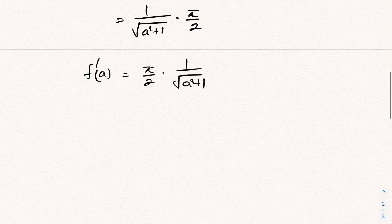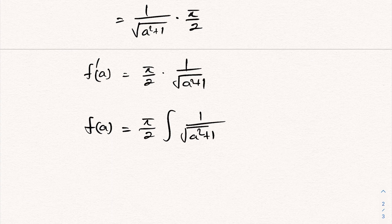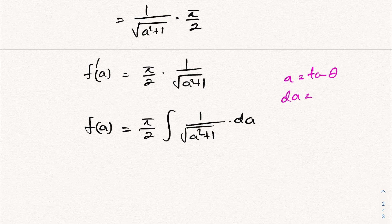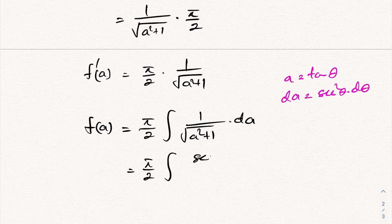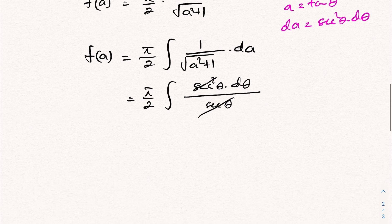Now we should integrate with respect to a: F(a) = (π/2)∫ da/√(a²+1). To solve this integral, I take the substitution a = tan θ, so da = sec²θ dθ. Substituting: we get (π/2)∫ sec²θ dθ / √(tan²θ + 1). Since √(sec²θ) = sec θ, the sec θ terms cancel.